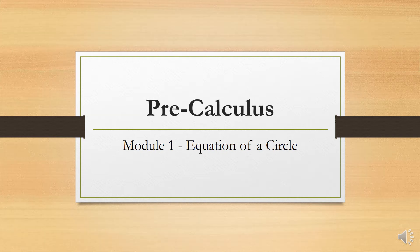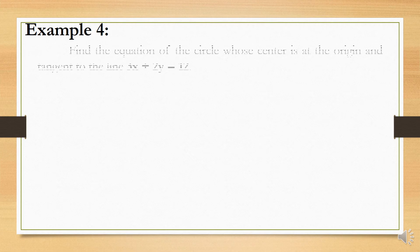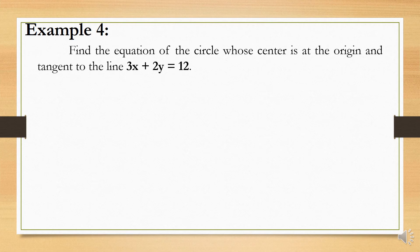Pre-Calculus, Module 1, Equation of a Circle. Example number 4: find the equation of the circle whose center is at the origin and tangent to the line 3x plus 2y is equal to 12.